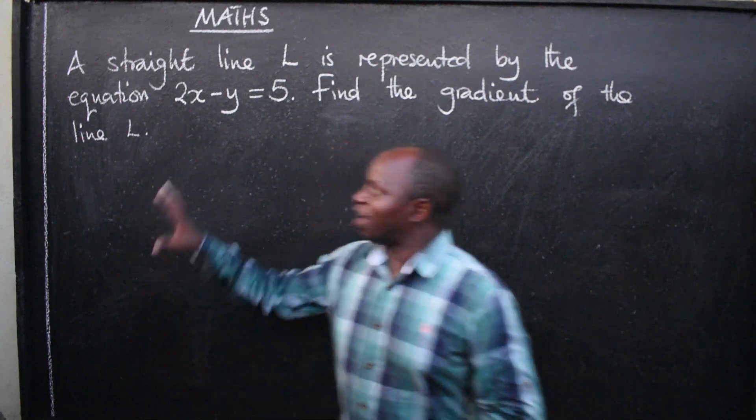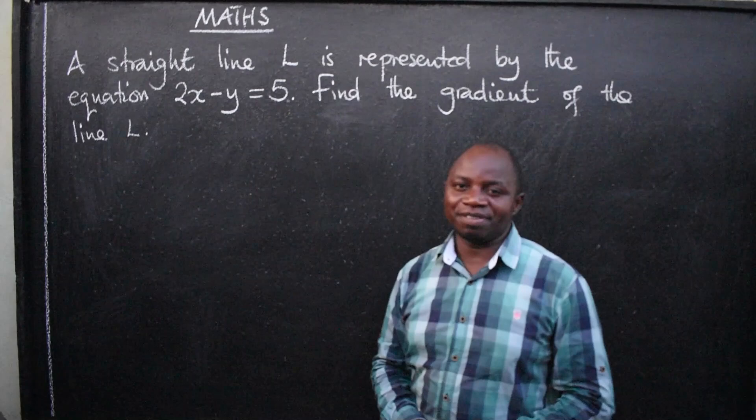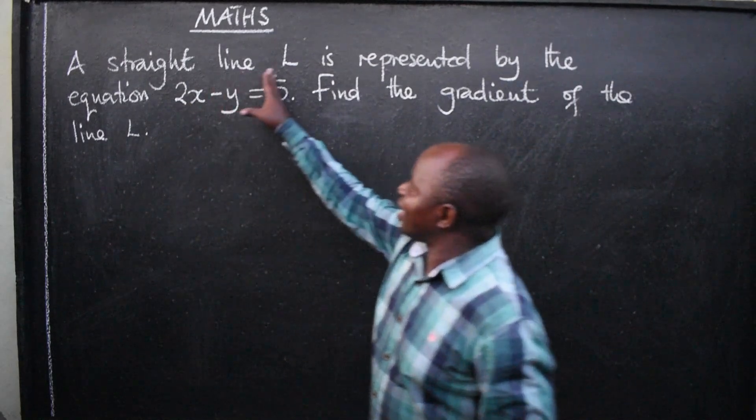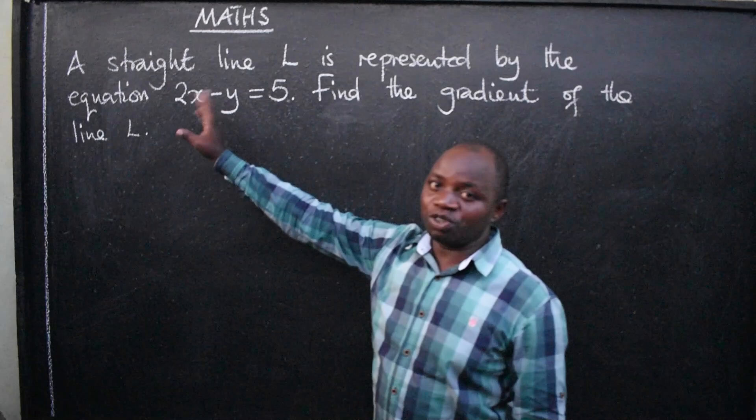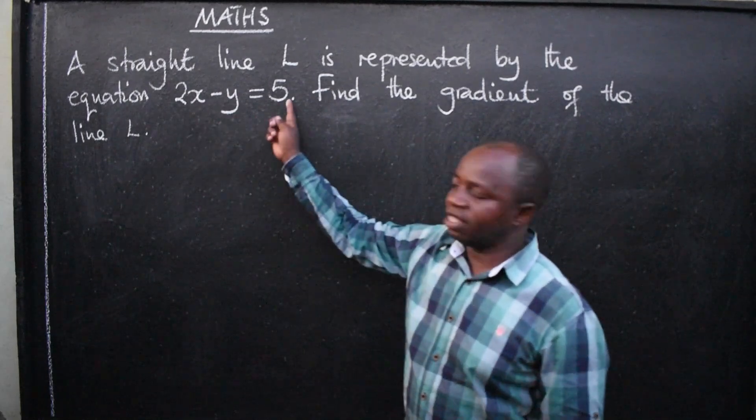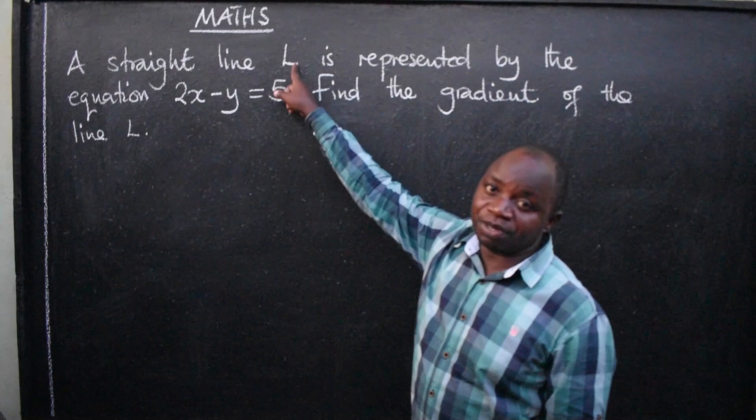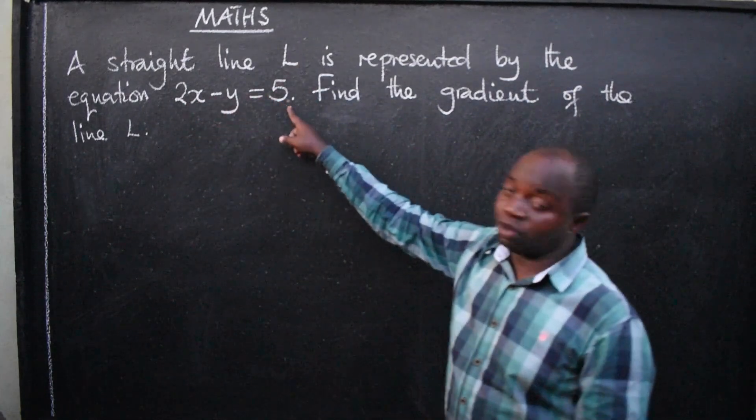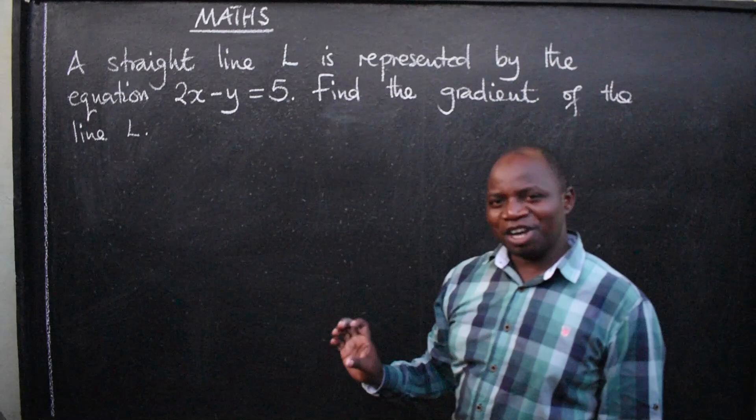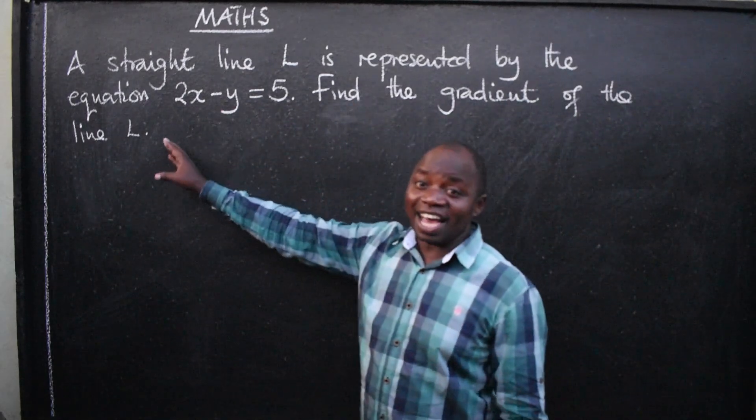Hello learners. We have a question on the board. This is mathematics. A straight line L is represented by the equation 2x minus y equals 5, and now the question is: find the gradient of the line L.